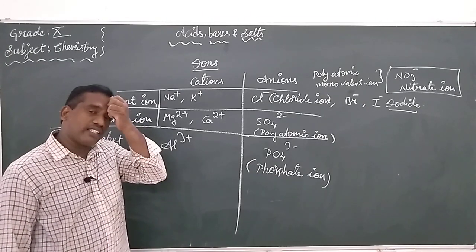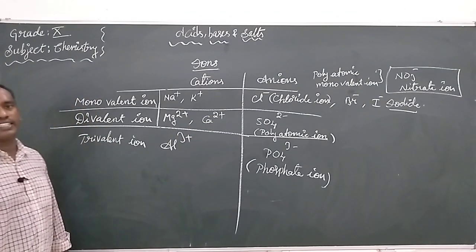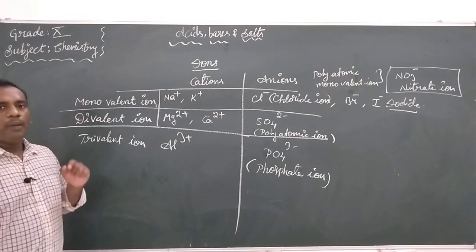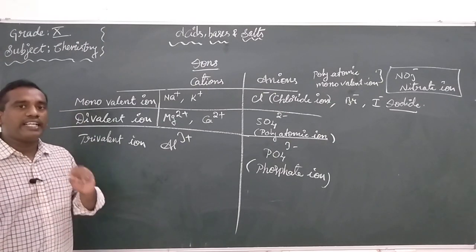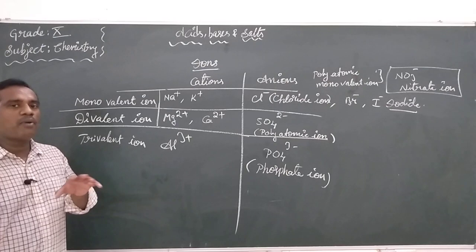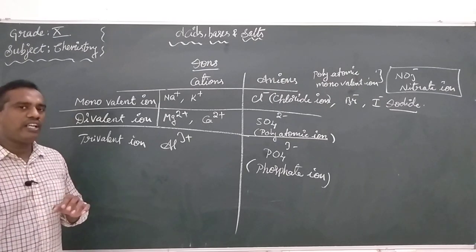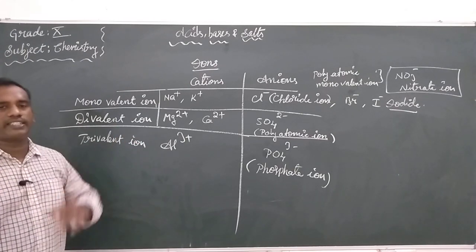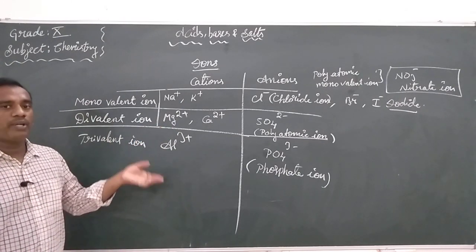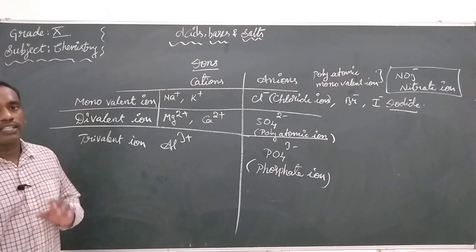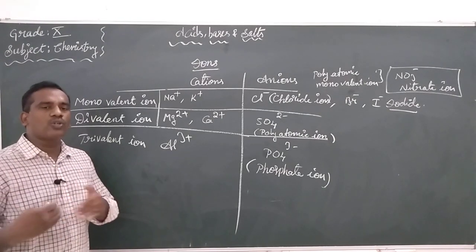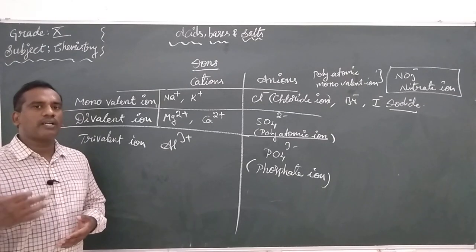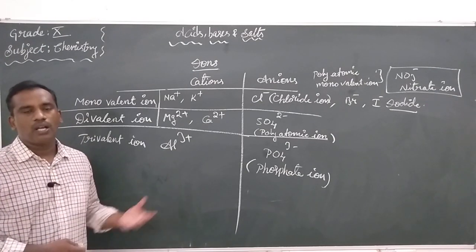So this is something we have recalled. What is the need of this? We know the crisscross method. At times there are situations where you must write the formula of a salt when the name is given. We apply these ion concepts using the crisscross method to find the formula.